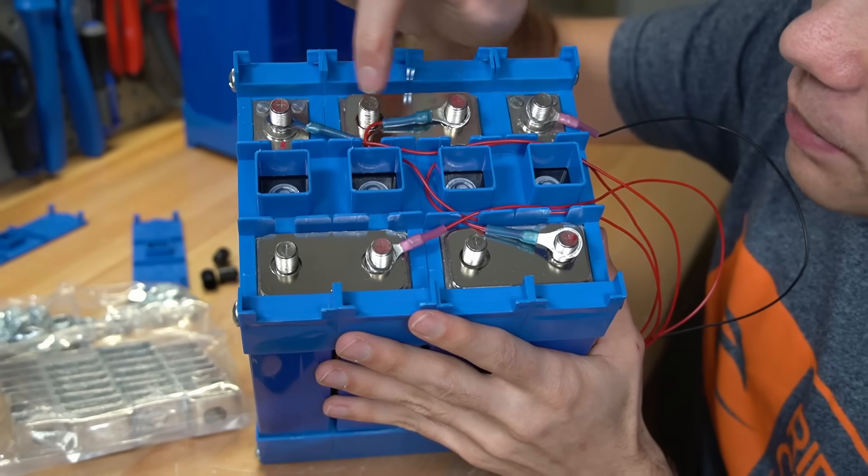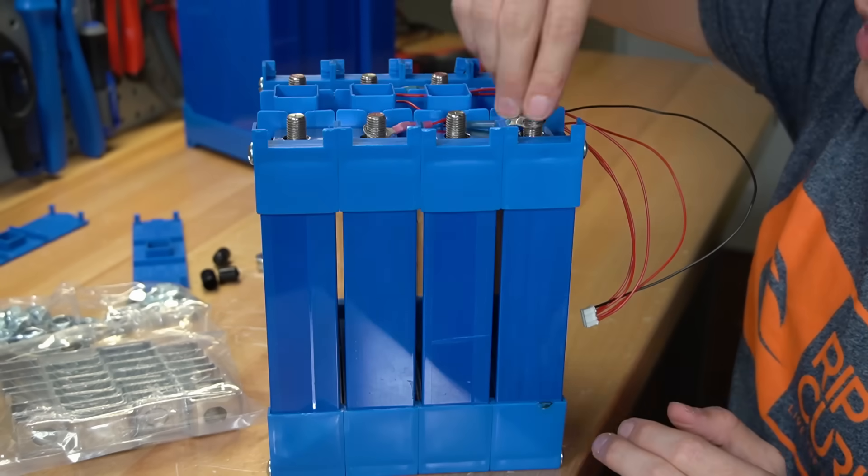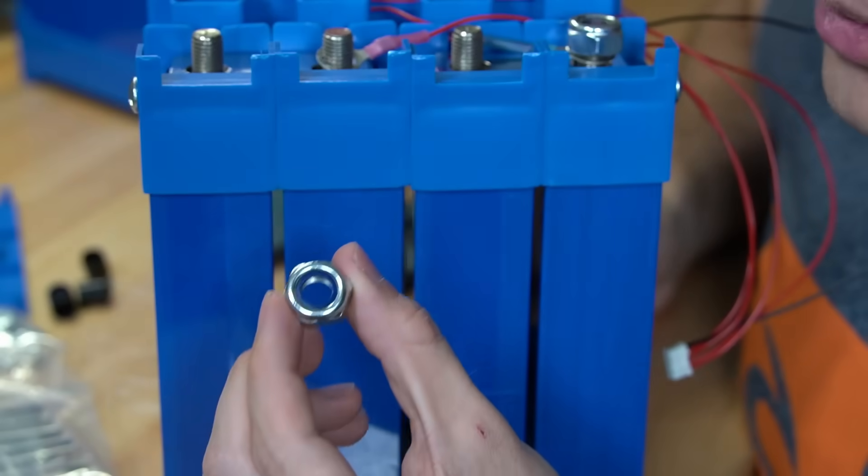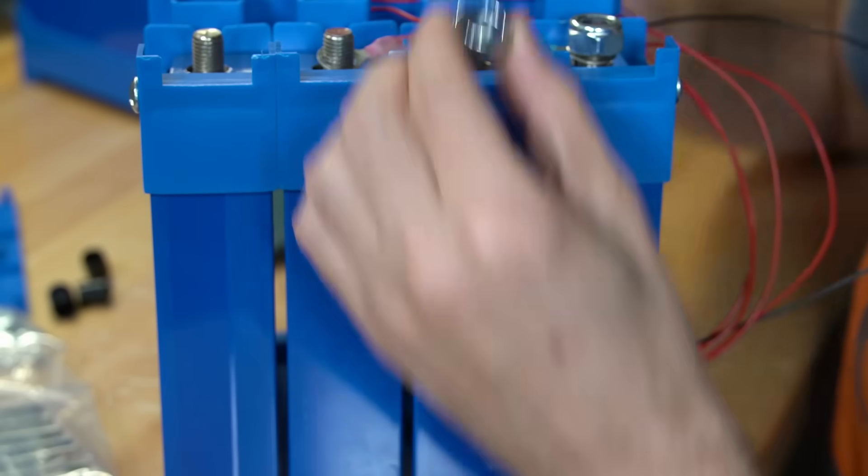Now I wired up the balance lead through these little holes and it's nice and organized. Now we're going to add the terminal nuts. It even comes with nylock nuts which are great for vibration. So this will be perfect for mobile systems.